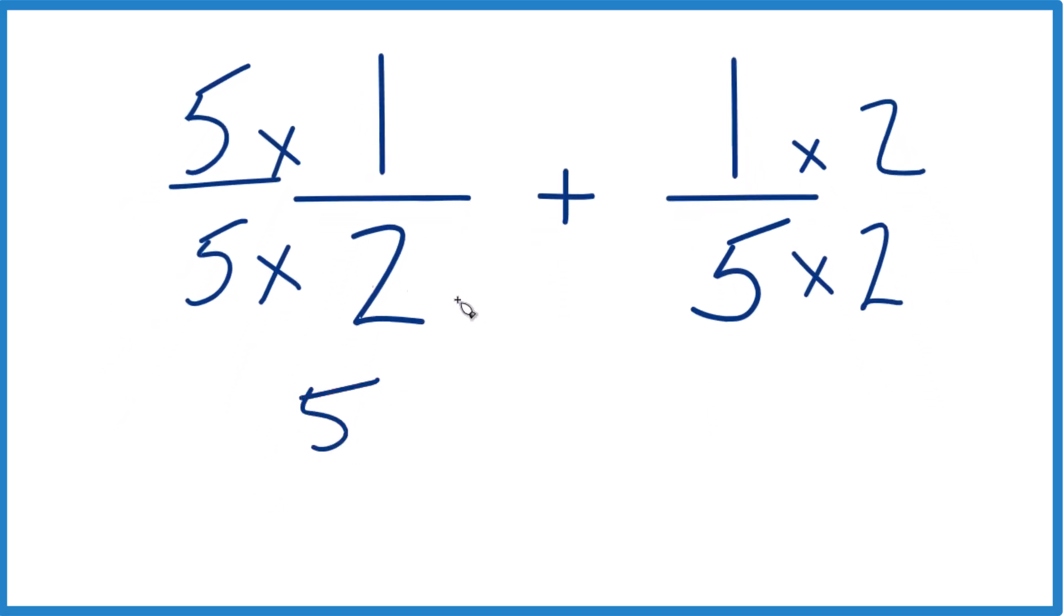So 5 times 1 is 5, 5 times 2 is 10. You get 5 tenths, that's the same as 1 half. Plus 1 times 2 is 2, 5 times 2 is 10, 2 tenths which is the same as 1 fifth.